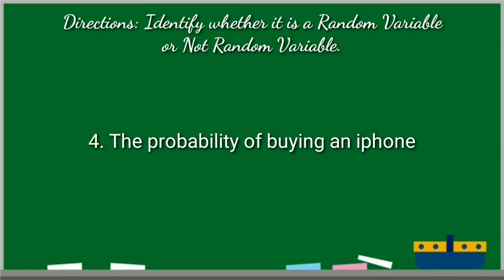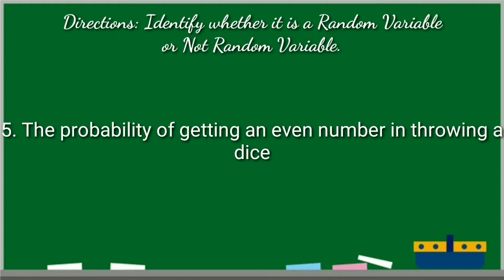Number four, the probability of buying an iPhone. What is your answer? The answer is not random variable. It does not measure or count. Number five, the probability of getting an even number in throwing a dice. What is your answer? The answer is random variable. It does measure or count.